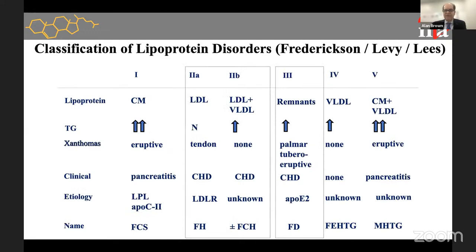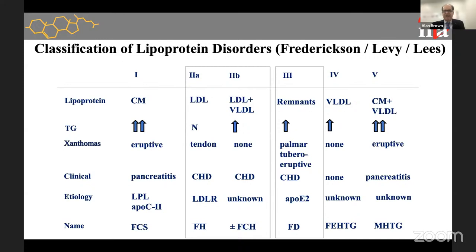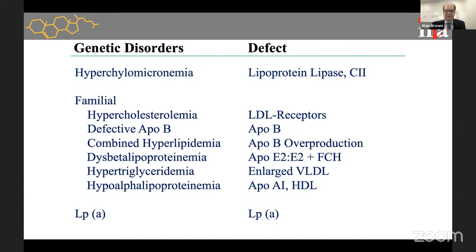There is a classification — the Fredrickson-Levy classification, type 1, type 2A, etc. — that's been around for years. We don't use this classification very much anymore. We use more of a name for the disorders that helps you understand what particles are abnormal in the blood. We're going to talk about familial chylomicronemia, familial hypercholesterolemia, familial combined dyslipidemia, familial dysbeta, familial hypertriglyceridemia, hypoalpha, and Lp little a.